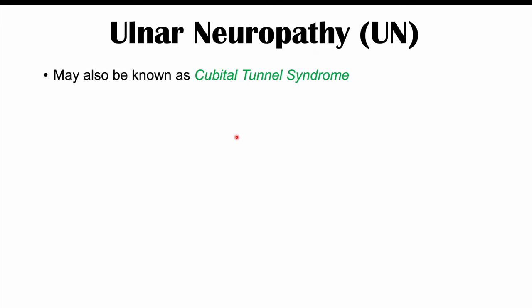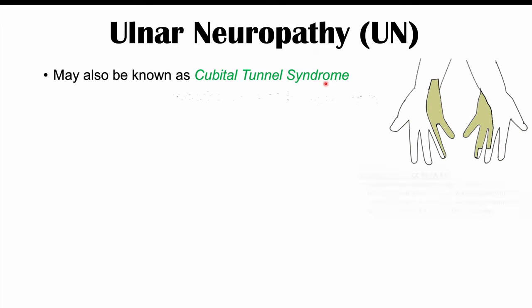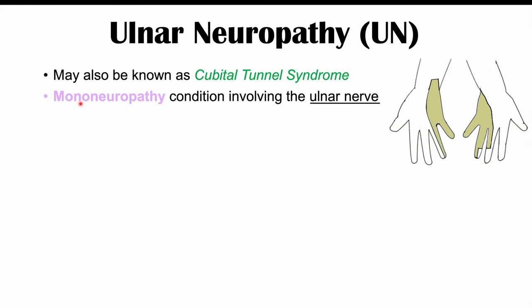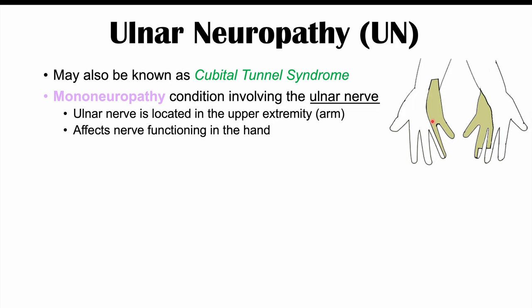Ulnar neuropathy may also be known as cubital tunnel syndrome. It is a mononeuropathy condition involving the ulnar nerve — mono meaning one, so one nerve is involved. The ulnar nerve is located in the upper extremity, and there's going to be numbness and tingling sensations in the pinky or fifth digit, the ulnar aspect of the hand, and half of the ring finger closest to the fifth digit. Those are some of the hallmark findings.